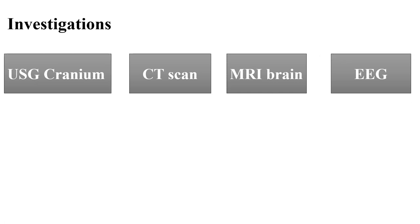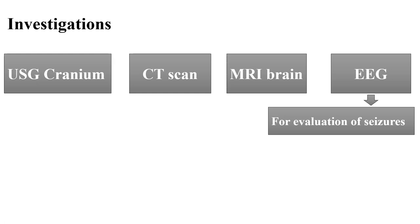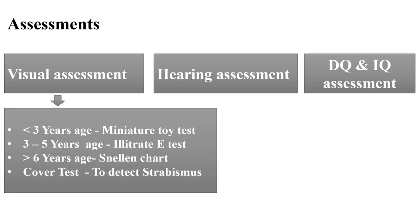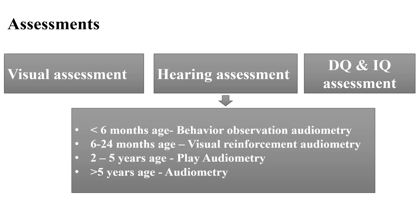EEG should be performed for evaluation of seizures in a CP child. For visual assessment: in less than 3 years — miniature toy test; 3 to 5 years — illiterate E-chart; more than 6 years — Snellen chart; and cover test to detect strabismus. Hearing assessment: less than 6 months — behavioral observational audiometry; 6 to 24 months — visual reinforcement audiometry; 2 to 5 years — play audiometry; more than 5 years — pure tone audiometry.